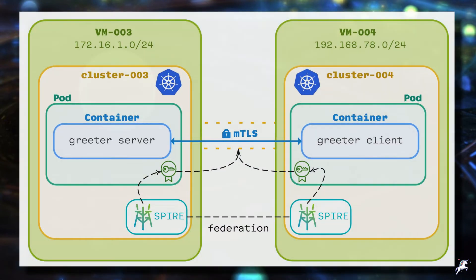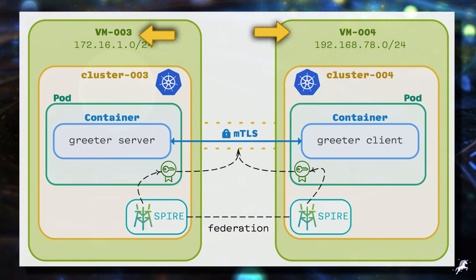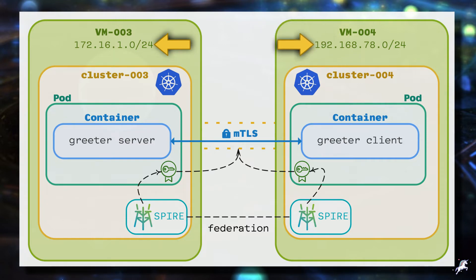Let me show you what we are planning to implement at a high level. In our setup, we'll have two virtual machines in two separate networks. The first one is VM3, which is on the 172.16.1.0/24 subnet, and the other one is VM4, on the subnet 192.168.78.0/24. These two machines can ping each other — there is network connectivity and a network route between them.